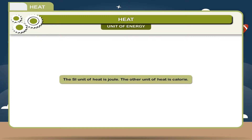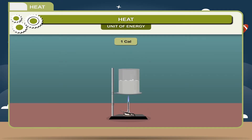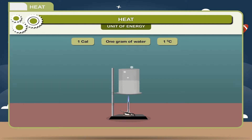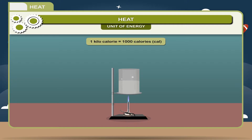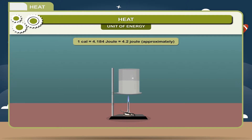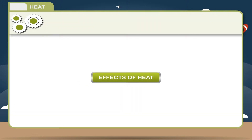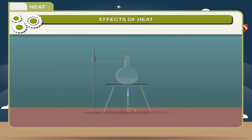Unit of heat: the SI unit of heat is Joule. The other unit of heat is calorie. One calorie can be defined as the quantity of heat required to raise the temperature of one gram of water by one degree Celsius. One kilocalorie is equal to 1000 calories. One calorie is equal to 4.184 joules, approximately 4.2 joules.